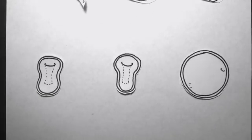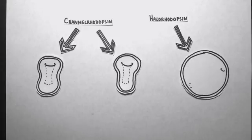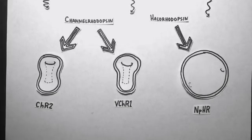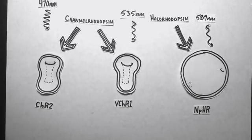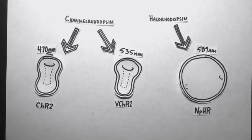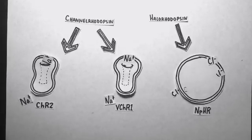Two main types of opsins are used in optogenetics: channelrhodopsin and halorhodopsin. Channelrhodopsin is used for stimulating an electrical impulse, and halorhodopsin is used for silencing electrical impulses. Both work in the same way. When exposed to a particular wavelength of light, an ion channel located in the cell membrane opens, and a flow of ions is let into the cell.